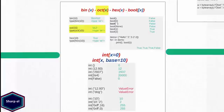The oct function, short for octal, is very similar to the binary function but it returns an octal string. Similarly, the hex function returns a hexadecimal string.